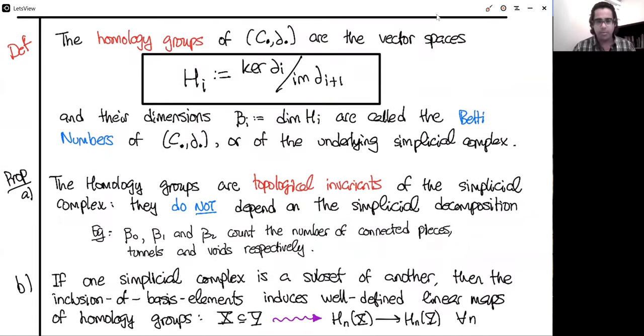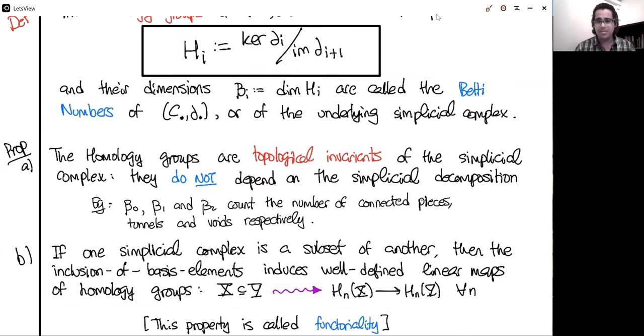And the other important property is if one simplicial complex sits inside the other, there are canonical induced linear maps between these homology vector spaces. So if X sits inside Y as a sub-simplicial complex, then you get an induced map on homology from the homology groups of X to the homology groups of Y in every dimension. This property is called functoriality. If you Google it, terrible things happen, so don't Google it.